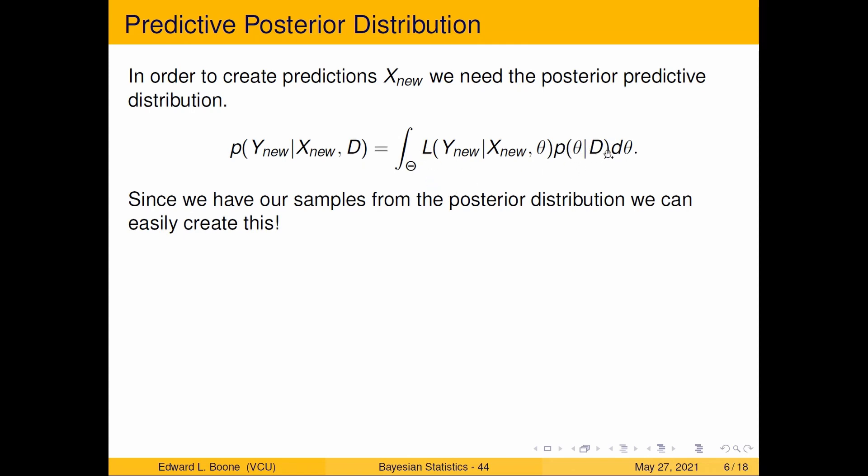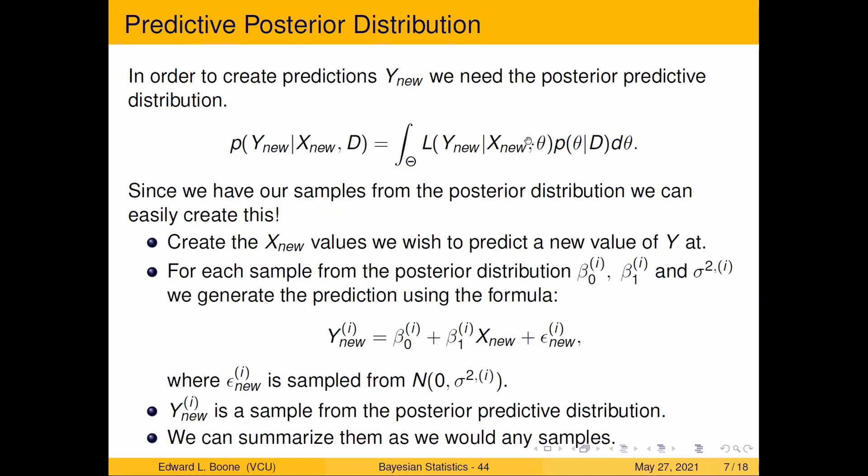For each sample of the posterior distribution, you're going to take the betas and the sigma squared and generate a prediction. I'm going to have a new value of y via samples. X new is not a sample, it's a specific number, but for these we actually have samples. We can generate a sample for this one by just sampling. Remember we assumed it was normal zero sigma squared I, so I can pull a sample, plug it in, and get